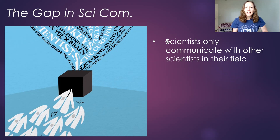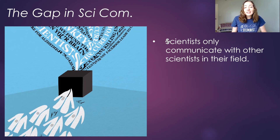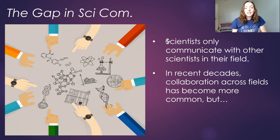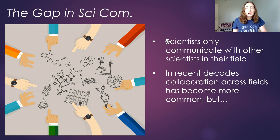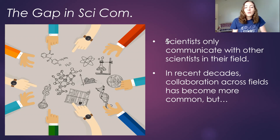Another major problem with the way scientists communicate to the public is that scientists tend to be stuck in a loop of publishing papers to journals that pretty much only other scientists read, and are really only communicating with others in their field. We've gotten a little better in recent decades at collaborating across fields — physics with geology, planetary science with chemistry — and there are even interdisciplinary fields like biogeochemistry becoming popular.